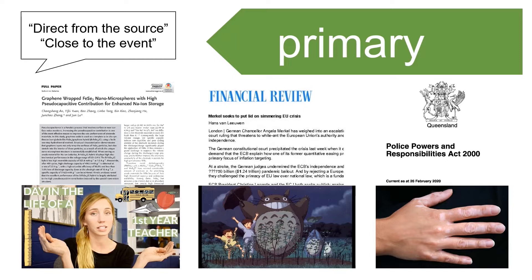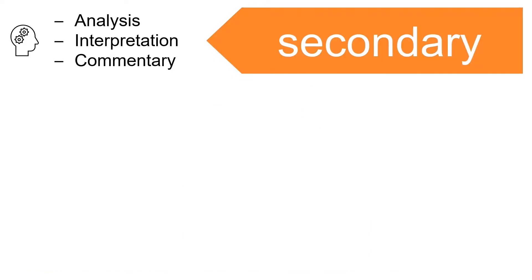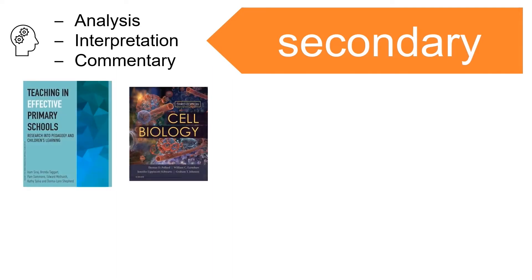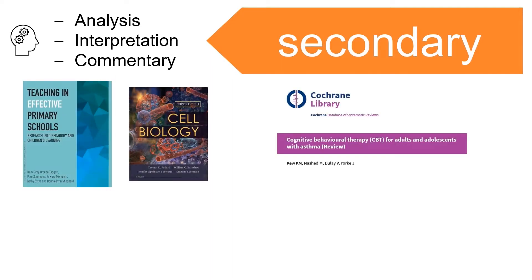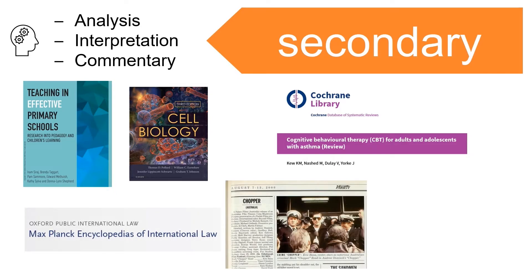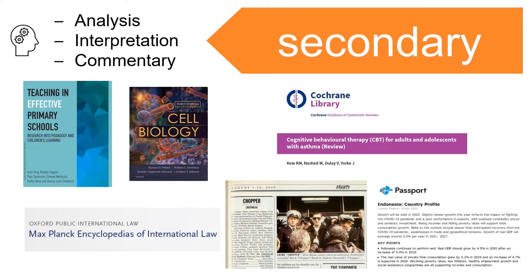Secondary sources of information analyse, interpret or comment on primary sources. Secondary sources include encyclopedias, journal articles that review the work of other authors like systematic reviews or literature reviews, most books — as they provide overviews or summaries on the topic — newspaper articles that give commentary or opinion, often called editorials, and market or economic analysis.